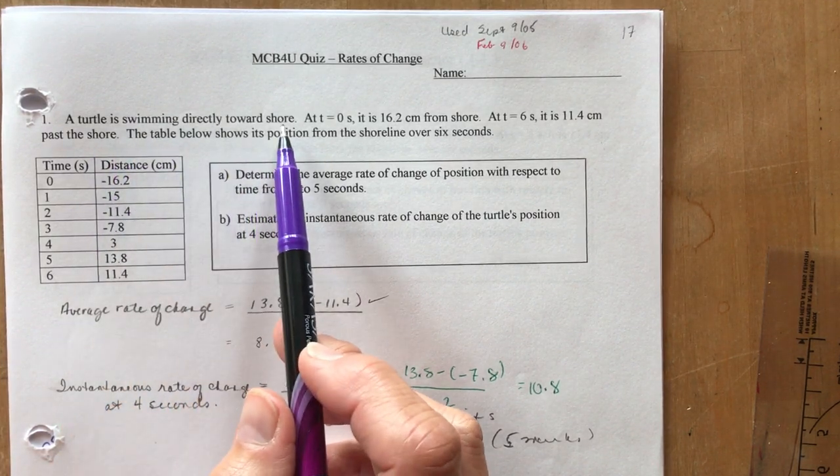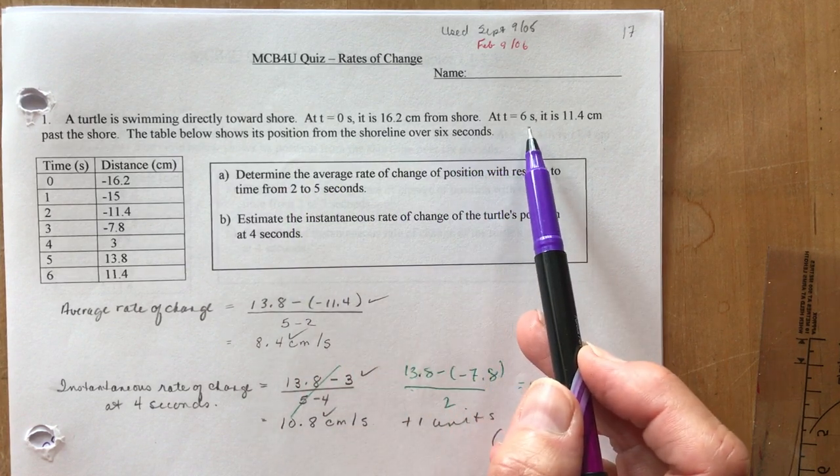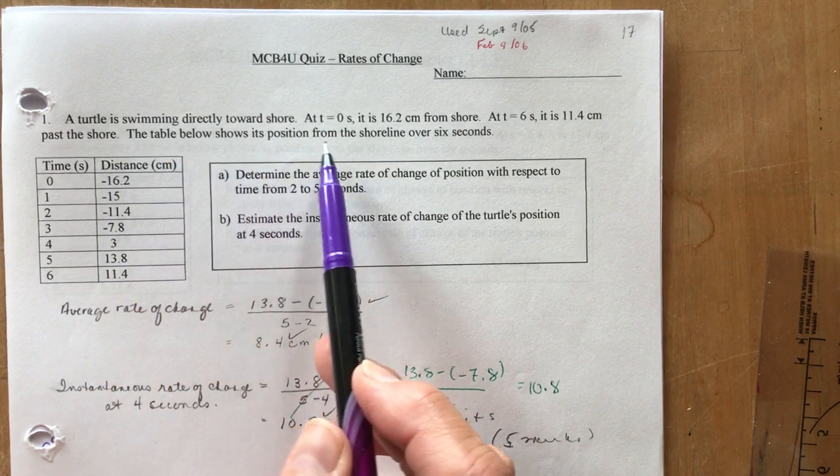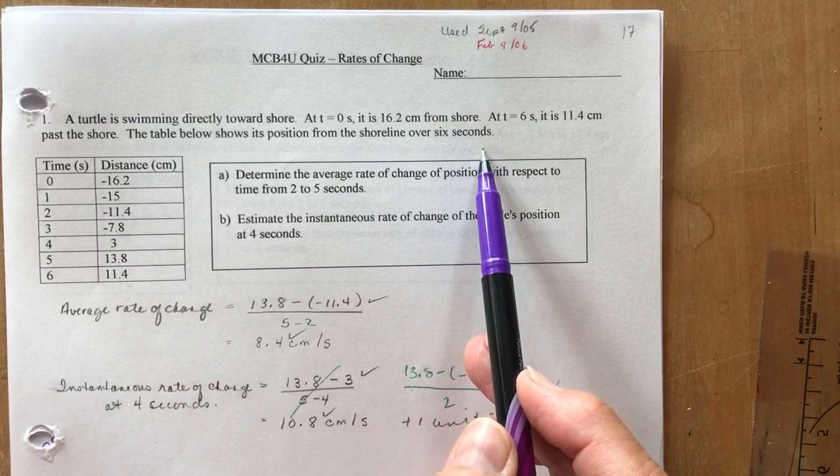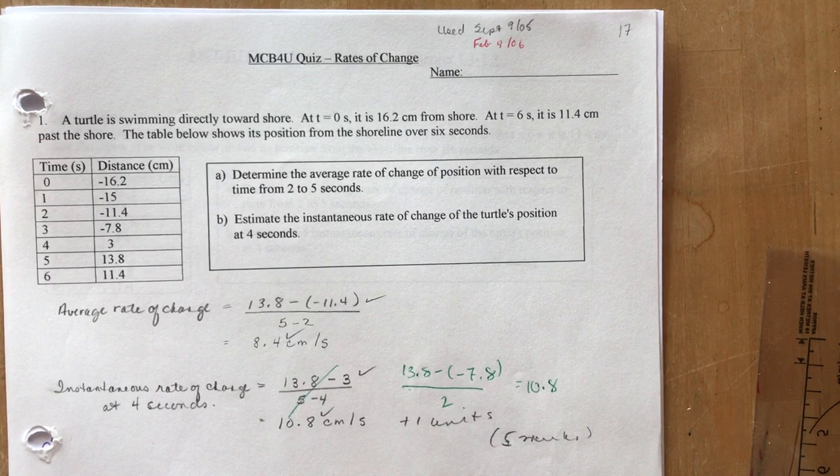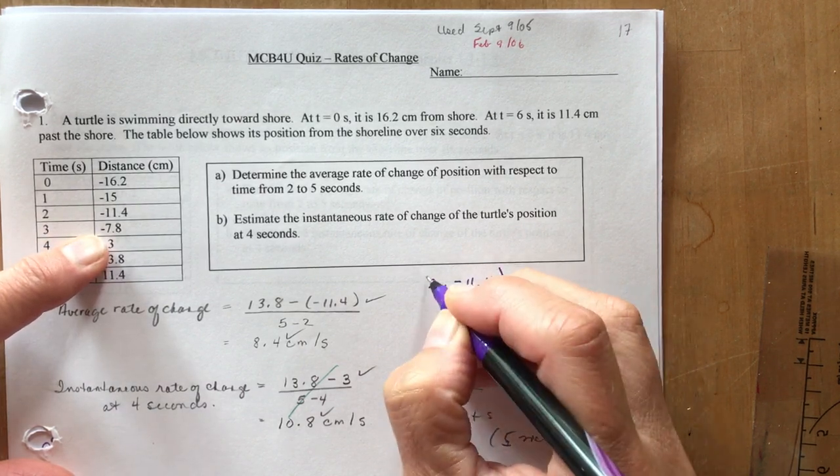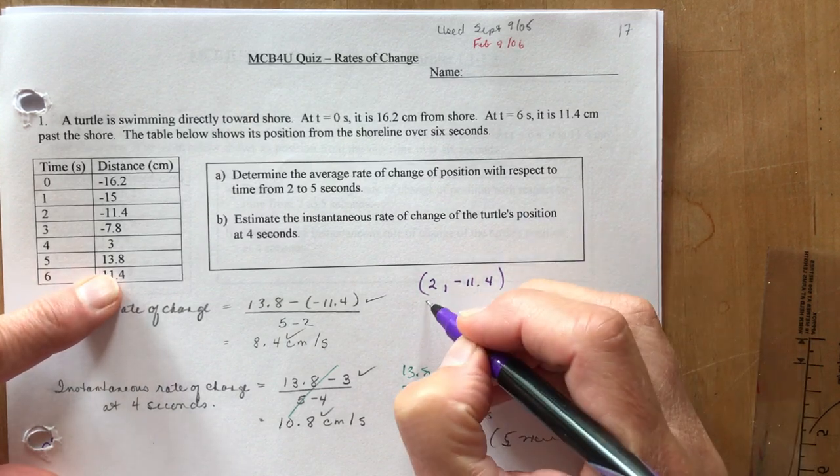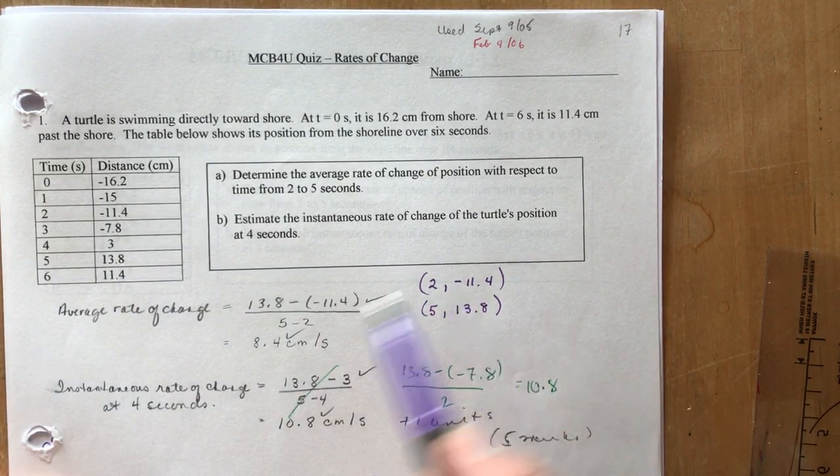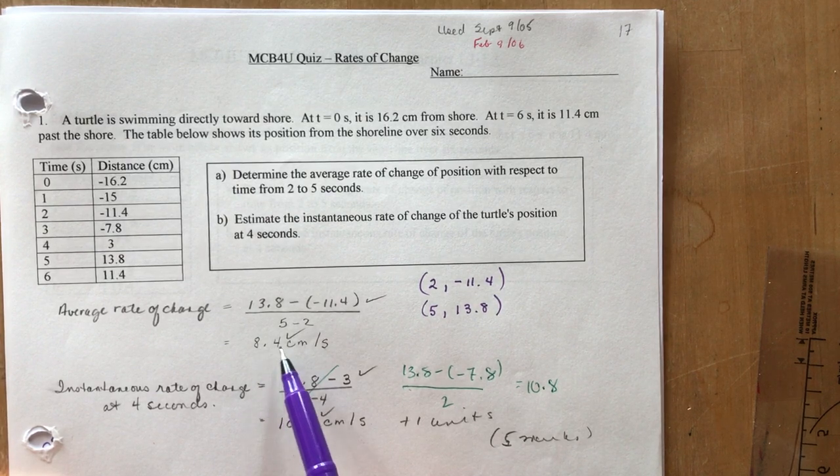The question said a turtle is swimming directly toward shore. At t equals 0 it's 16.2 centimeters from the shore. At t equals 6, it's 11.4 centimeters from the shore. The table below shows its position from the shoreline over 6 seconds. Determine the average rate of change of position with respect to time from 2 to 5 seconds. Remember, from 2 to 5, all you have to do is find the coordinates. At 2 seconds we have x is 2, y is -11.4. It's a good idea to write up these coordinates: 2, -11.4 to 5, 13.8. Then all you have to do is find the slope. I have 13.8 minus -11.4, that's rise over run, 5 minus 2, and the average rate of change was 8.4 centimeters per second.